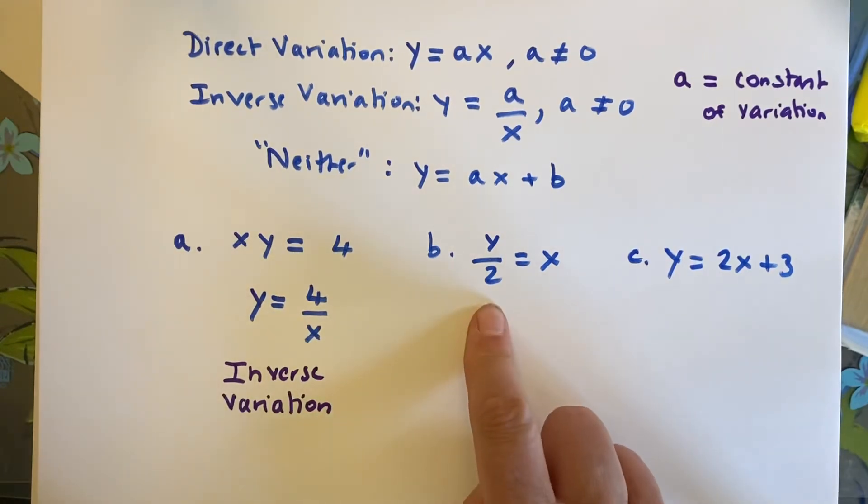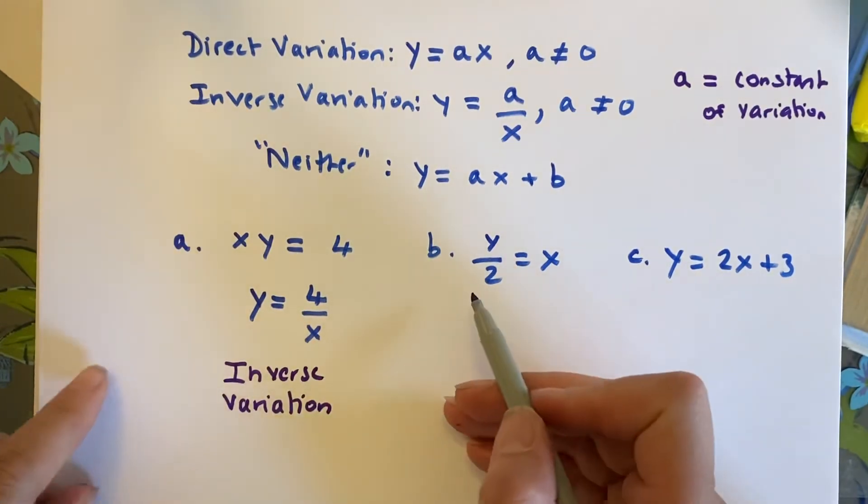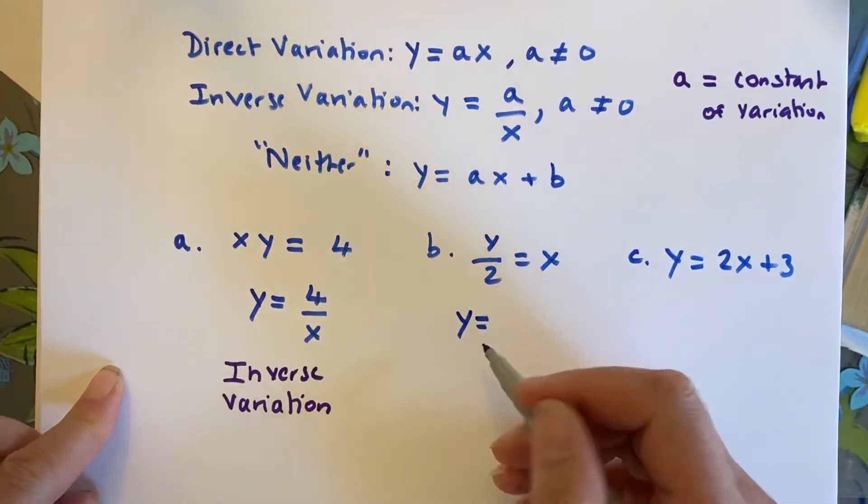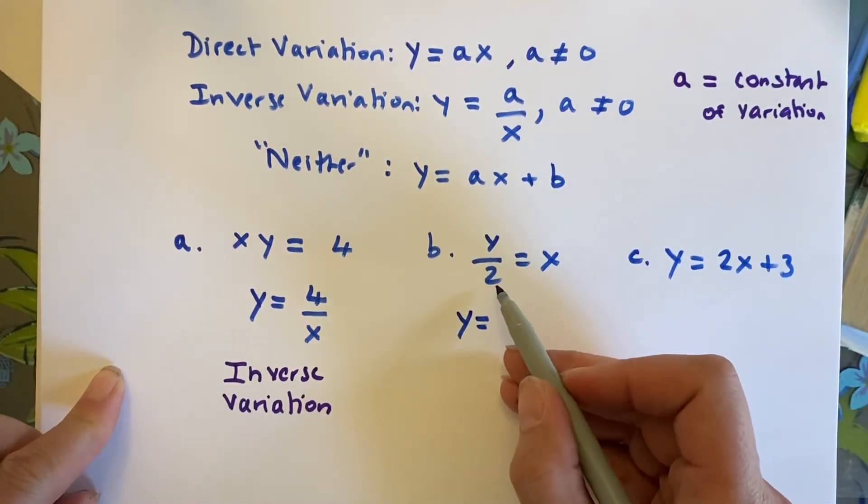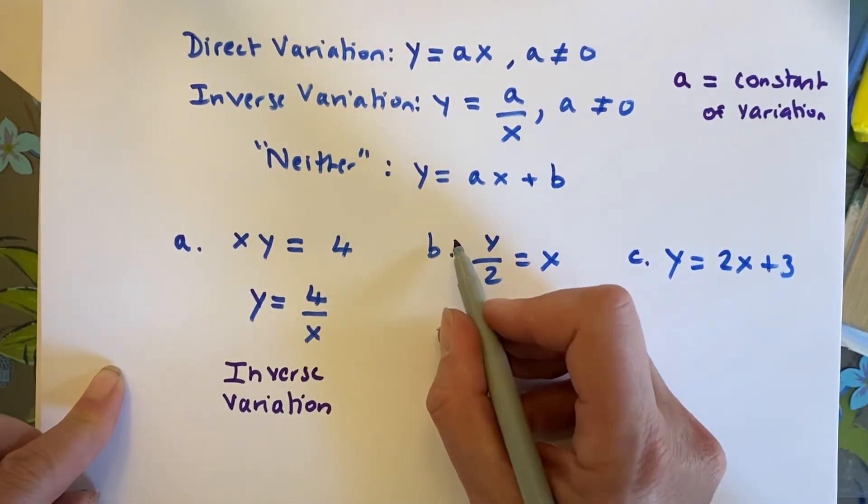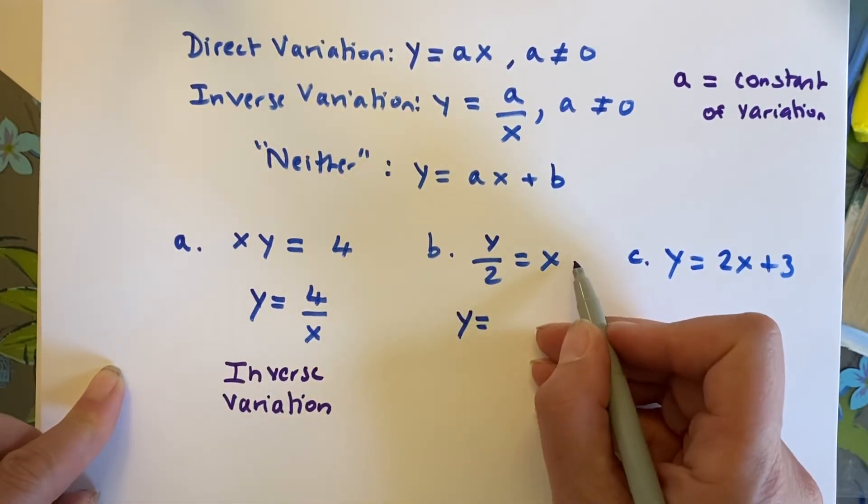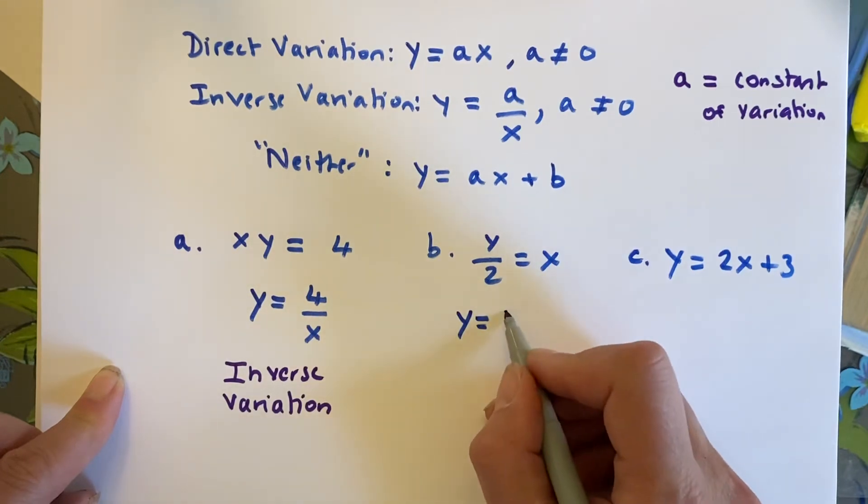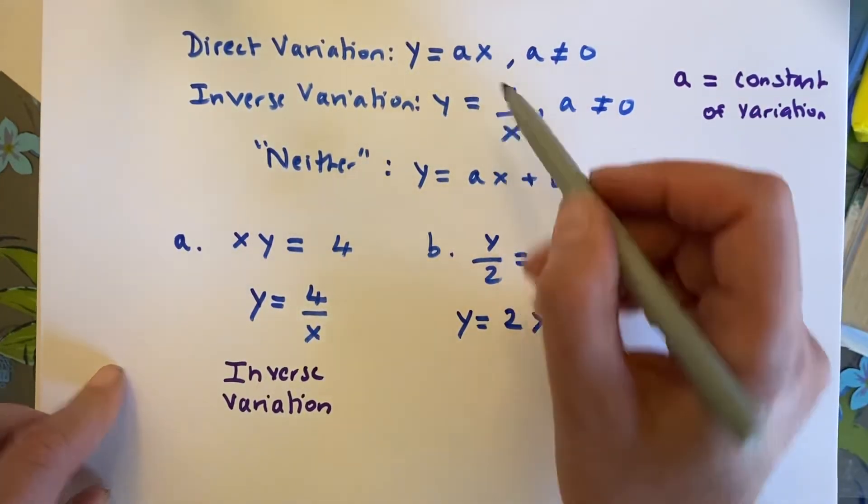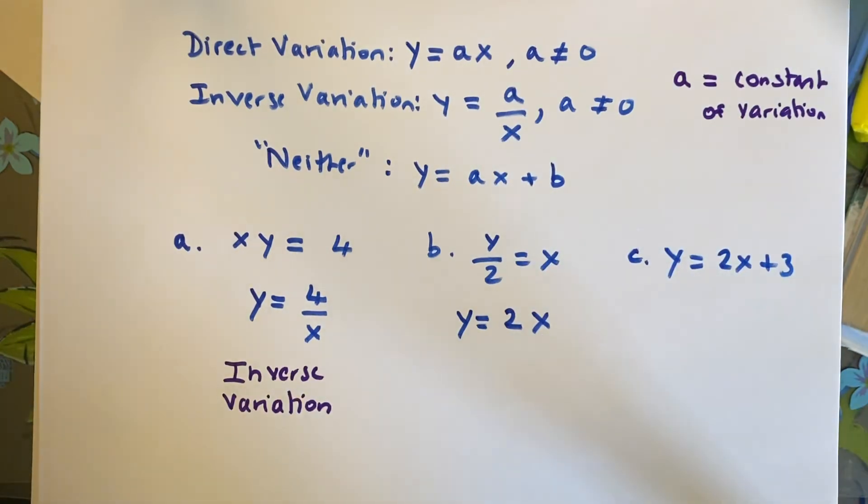Now, here, I'm going to look and I'm going to say, again, it's not in y equal form. I have to put it in a y equal something form. And since this is divided by 2, the opposite operation is multiplying this side and this side by 2. So, when I do that, I get y equals 2 times x. And if I look up here, that is the definition of direct variation.